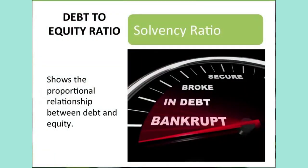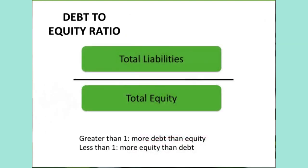The debt to equity ratio tells us the proportional relationship of total liabilities to total equity. This ratio is a variant of the debt ratio and is a measure of solvency. It is calculated as total liabilities divided by total equity, and it tells us whether a company's assets are financed more by debt or by equity.